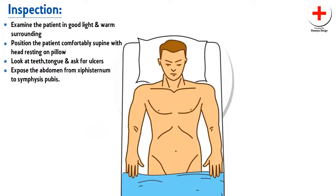Now we start our examination of the abdomen in detail. It always starts with inspection. Examine the patient in good light and a warm surrounding. Make sure the patient is in a comfortably supine position, resting on a pillow that relaxes the abdominal muscles. Expose the abdomen from the xiphisternum to the pubic symphysis. Stand at the patient's foot end and observe the shape, symmetry, type of respiration, and the umbilicus — is it inverted? Are there any scars, visible pulsation, or any other marks?